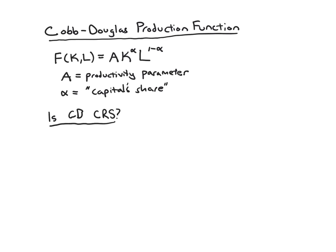The general test for constant returns to scale is: if we multiply K and L by Z — for instance, we doubled them — then our output should increase by a factor of Z. So let's see if that's true.